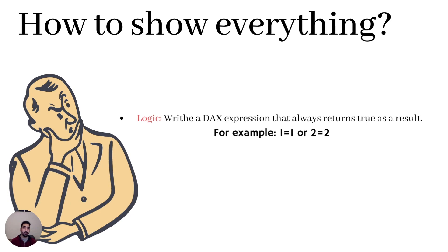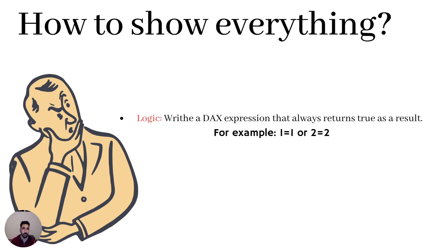Now the real question is: how do we show everything for the manager? Suppose I'm the manager and I'd like to see everything, but individual users should only see data corresponding to them. To answer this, you have to write your DAX expression in a way that always returns true — like saying one equals one, which is always true. So the manager's condition always returns true and they see everything, while regular employees use the standard dynamic RLS.